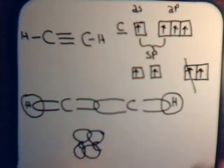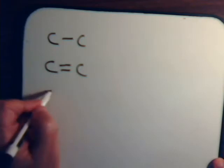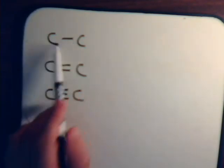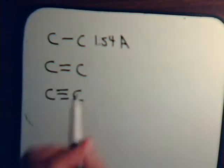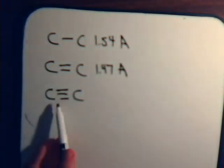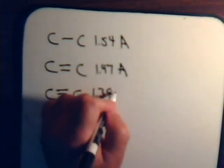Now, when we compare bond length, say with ethane, acetylene, or ethene, and acetylene, the sigma bond here, that has a length of about 1.54 angstroms. The sigma bond here is a little bit shorter. It's 1.37 angstroms. And the sigma bond here is a little bit shorter yet, that's 1.38 angstroms.